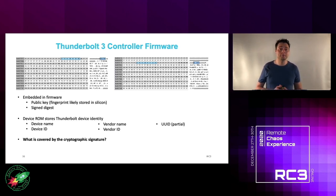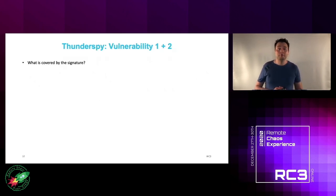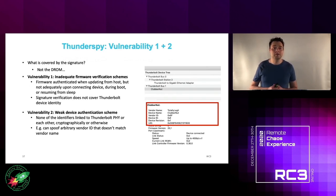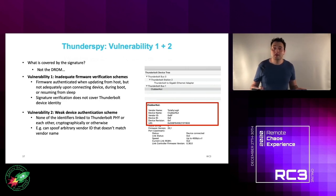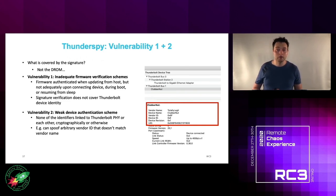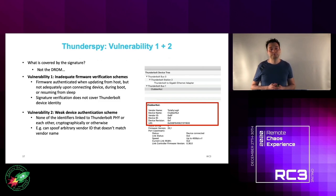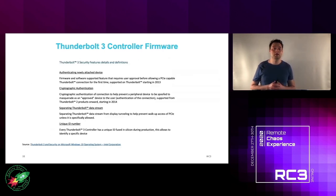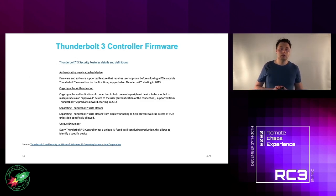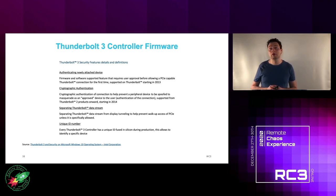It turns out the DROM is not covered by the signature. We found we can create completely arbitrary device identities — for example, 'Made by the vendor totally legitimate' — which of course makes no sense. What's more interesting is that you would expect the vendor ID to be tied to the vendor name, but during our research we found that is not the case. You can enter arbitrary values for any of these entries.